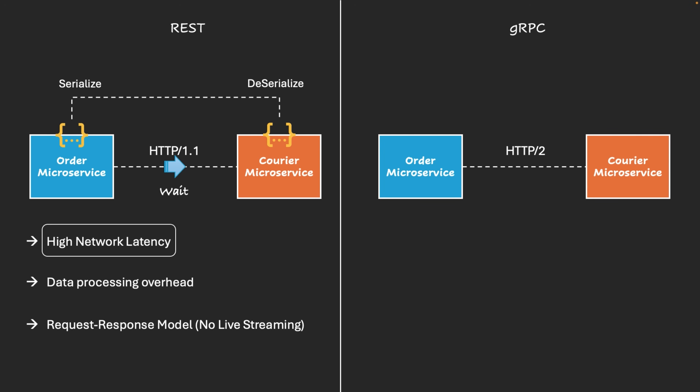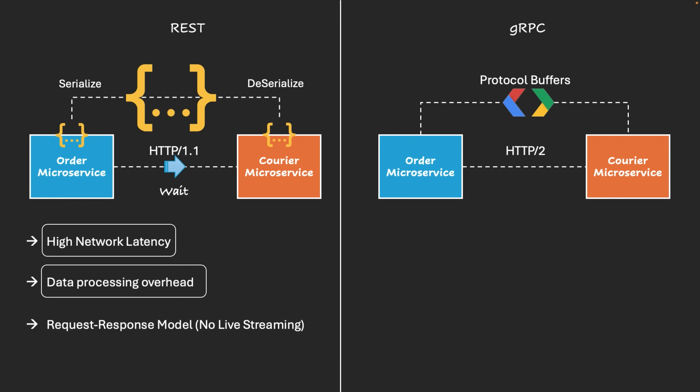For the data processing overhead problem, REST uses JSON data which is text-based and takes more time to process over the network. However, gRPC uses a different media type called Protocol Buffers, or protobuf. Protobuf is in binary format with compressed data, which is why the serialization and deserialization process is much faster compared to JSON. We will discuss more about protobuf in upcoming tutorials with more detailed explanation.